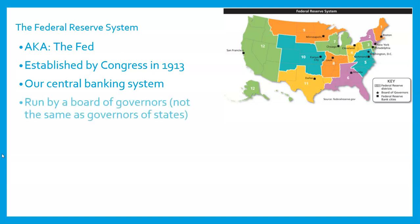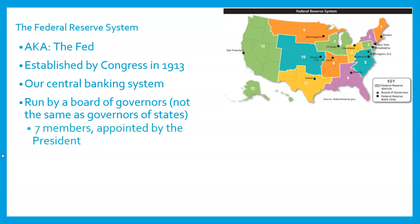Sometimes banks go to the Federal Reserve to borrow money. This is run by a board of governors — not the same as governors of states, so don't get those terms confused. Seven members are appointed by the president, one of them is the chairperson, and they serve for a term of 14 years. These people are supposed to be independent from day-to-day politics and make long-term financial decisions. Congress does have some oversight over the Federal Reserve, but they do maintain some independence.